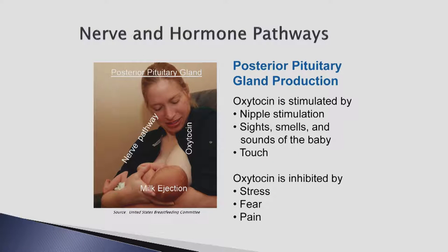The infant sucks at the breast, stimulating the nerve endings on the nipple, causing the hypothalamus to send a message to the posterior pituitary gland to release oxytocin. The oxytocin stimulates the myoepithelial cells to contract, which in turn causes letdown. The myoepithelial cells squeeze the alveolus, forcing the milk into the ducts. Mothers may verbalize an increase in pressure, tingling, or shooting pain as a result.